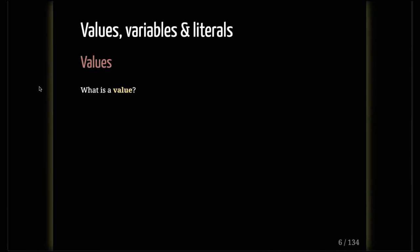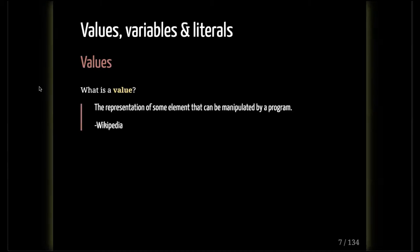One of the things that people often have difficulty with in programming that will get in your way no matter what you do is understanding values, data types, variables, and literals. These are all super fundamentals that everything else is built upon. So what is a value? A value, according to Wikipedia, is the representation of some element that can be manipulated by a program. It's ultimately your smallest unit of information.